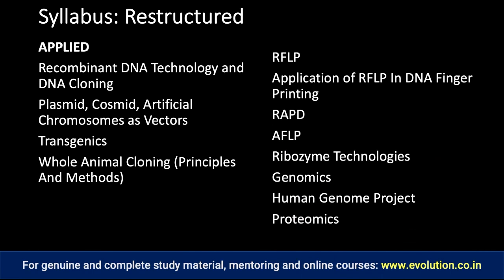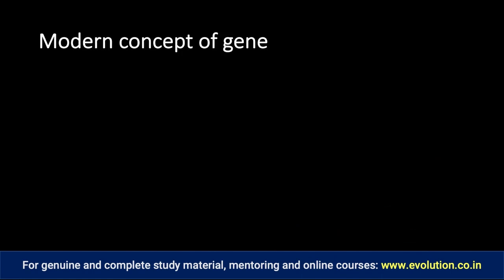So if you notice, the syllabus does not look big but you have to do a number of topics. Therefore we have divided it into two parts. In part one we are going to study molecular genetics — their topics and scope. The first topic, as mentioned, is modern concept of genes. You need to develop a way to write precisely what is a gene. Most students write very bad definitions of gene. Find the correct way to express a gene.